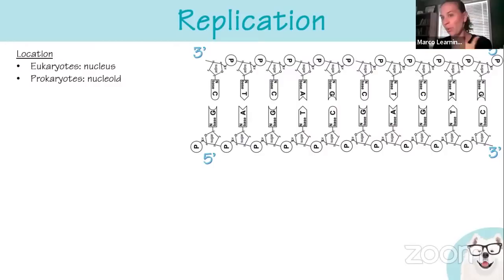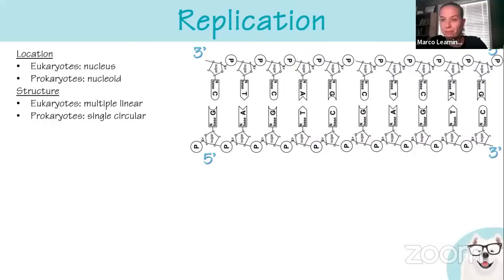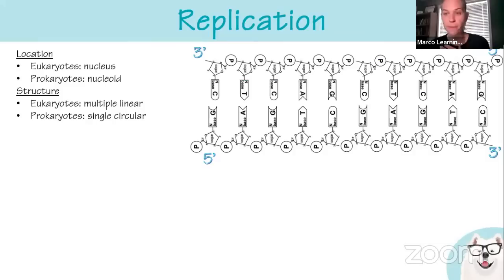In prokaryotes, since there's no membrane separating the processes, you can start translating as you transcribe. Both eukaryotes and prokaryotes have plasmids — small pieces of DNA that can be used to transform bacteria or cells. The research shows they're found in yeast as eukaryotic examples as well.